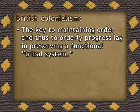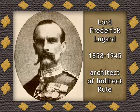To the British, the key to maintaining order, and thus to orderly progress, lay in preserving a functional tribal system, as they put it. As one author has said, the British were particularly concerned to construct what he calls 'tribal boxes' in which to contain their diverse and multi-ethnic populations. This emphasis on the tribal system implied supporting a tribal authority structure. It was Lord Frederick Lugard who elevated this idea of Indirect Rule to an influential theory of benevolent imperial administration.